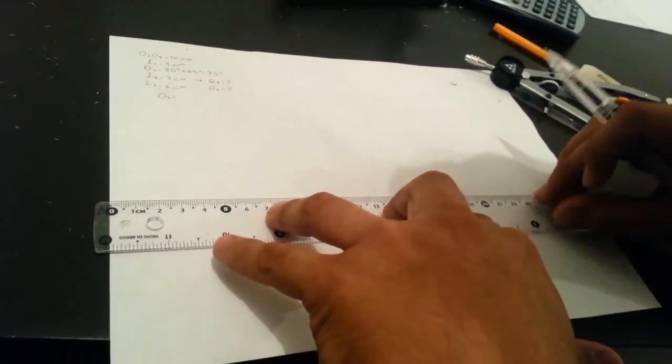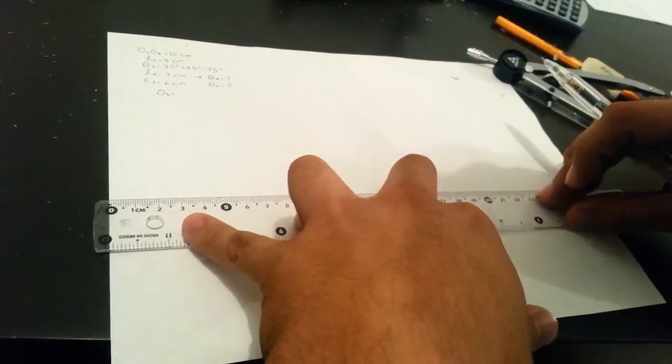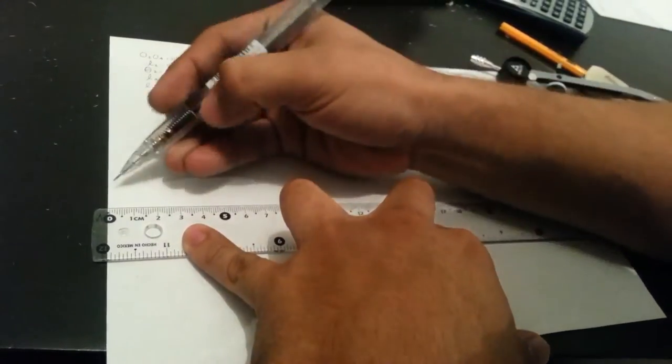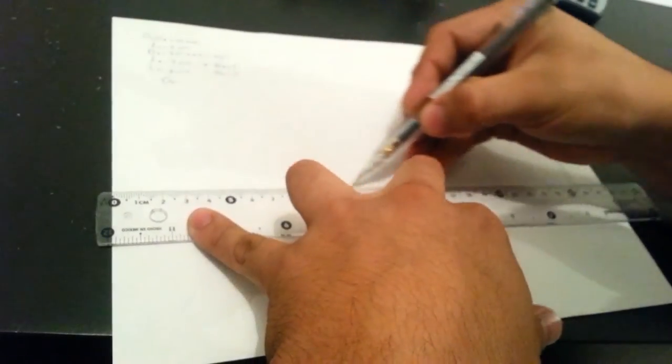Hi, I'm going to draw a 4-bar mechanism. First, you have to do a line on the X axis.